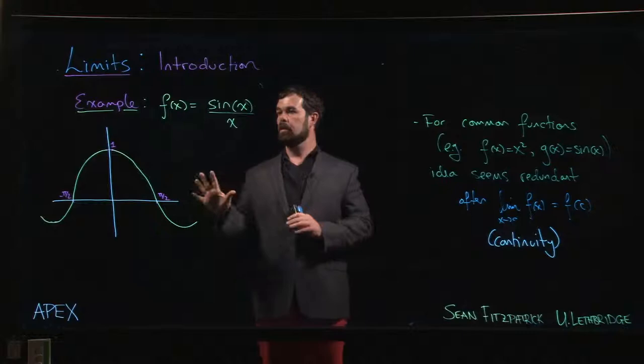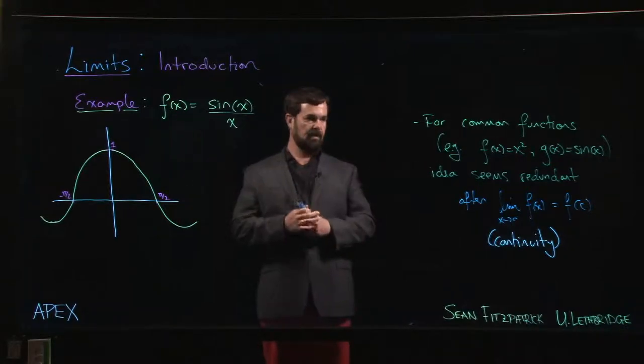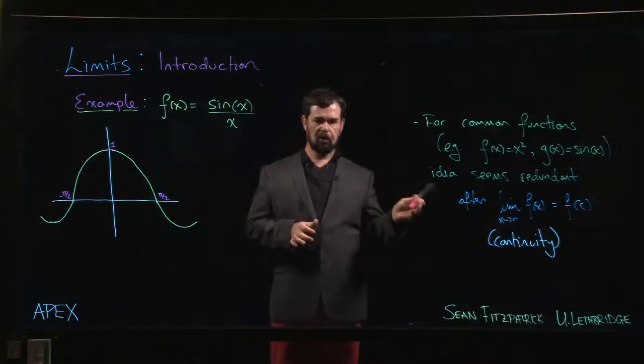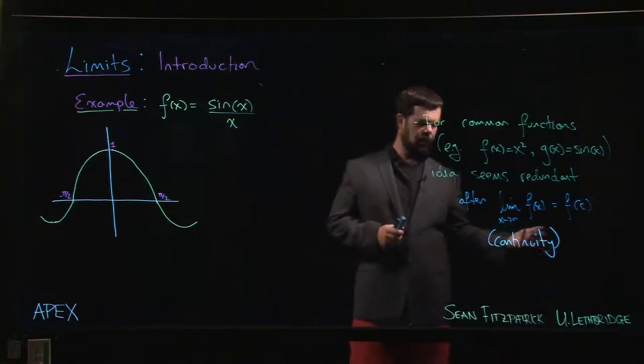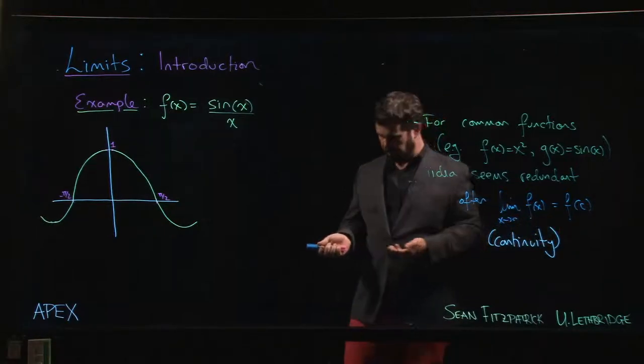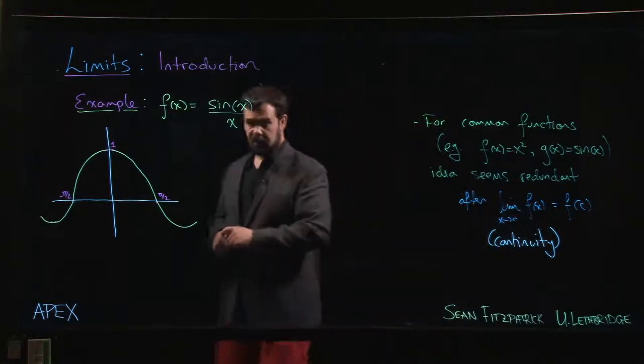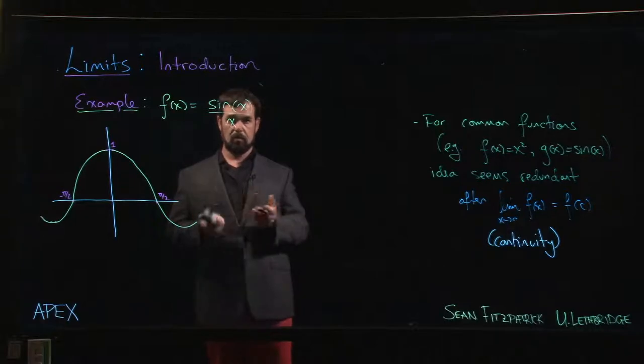So we want to look at an example of a function where this idea of a limit might be necessary. We talked about the fact that for most of the functions we're used to, if you want to know what's going on for a function near a point, you just plug in that point and see what value you get. And for many functions, we're going to find that that is indeed how you evaluate limits, by simply direct substitution. You plug in the value and you get the result.